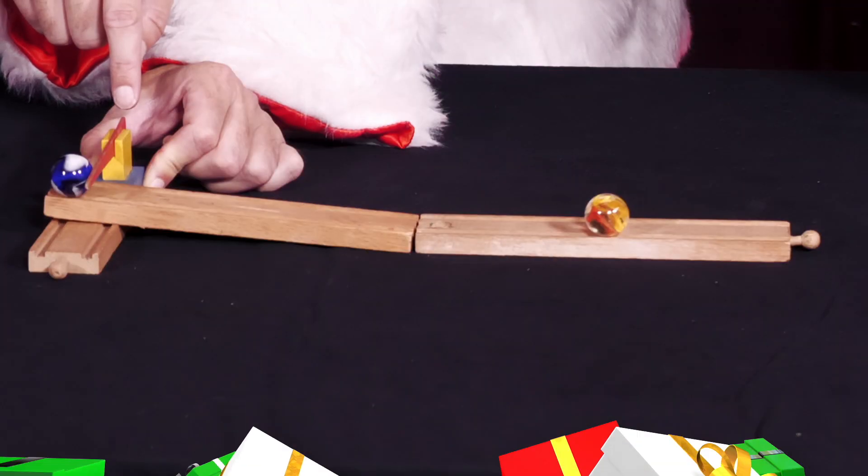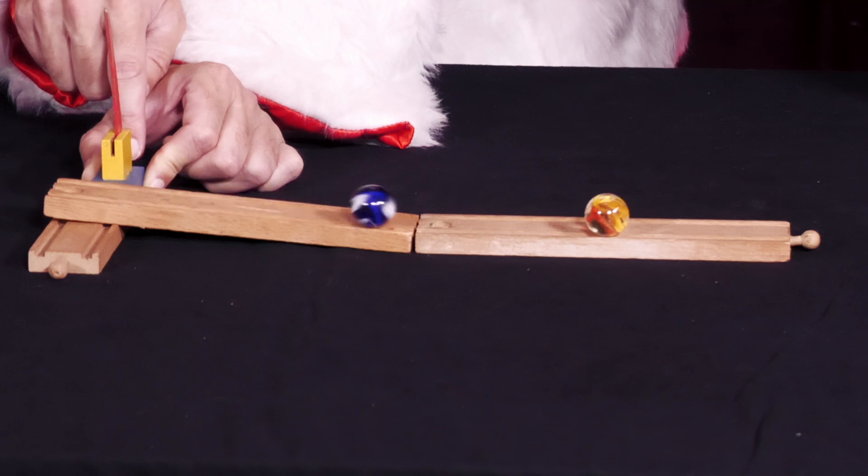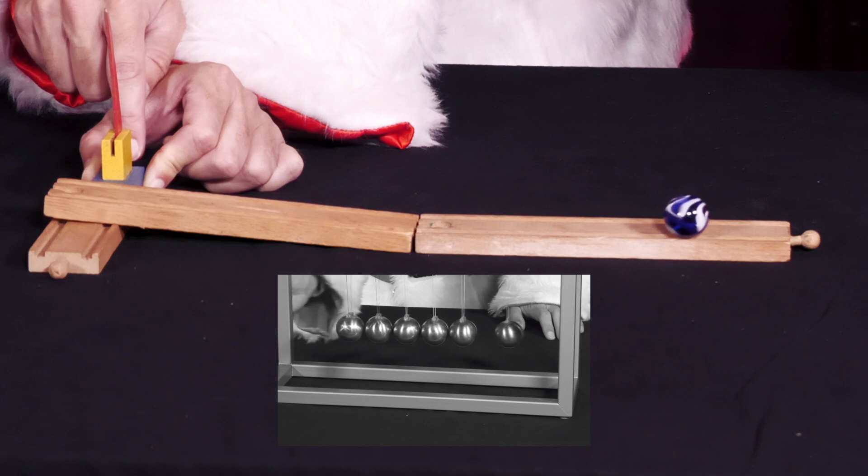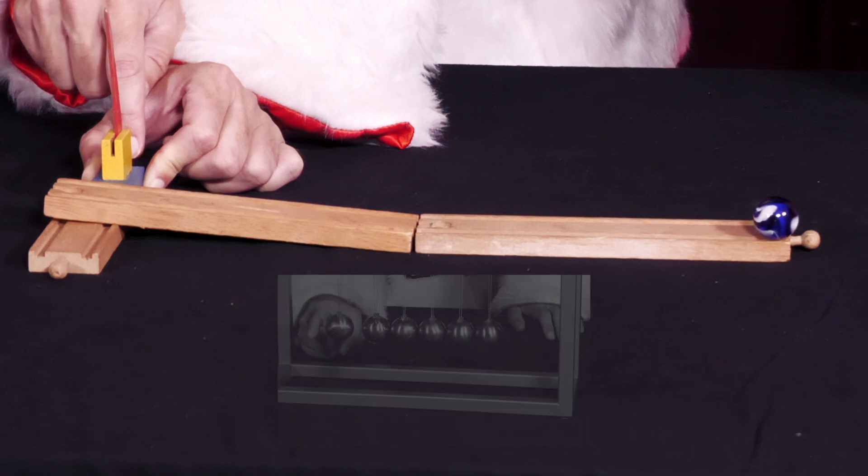The experiment is very similar to the Newton cradle. However, there is a decisive difference. The incoming ball rolls, whereas in Newton's cradle, it only exerts a linear movement. The incoming ball, therefore, also carries angular momentum.